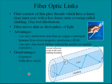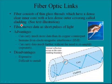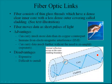Then we have fiber optic links, another method of connectivity. Fiber consists of thin glass threads with a dense, clear inner core — shown here as the darker blue area — surrounded by a less dense outer covering called the cladding. The fiber moves data as short pulses of light, shown here as arrows moving through the glass core.